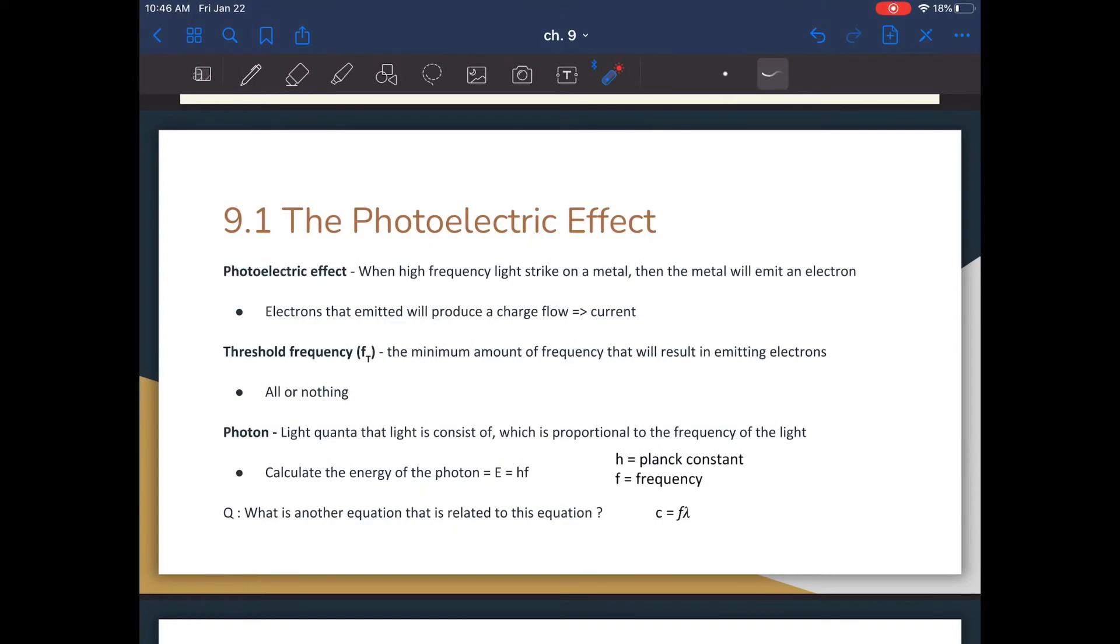Chapter 9.1 is about the photoelectric effect, and it basically states that when light of high enough frequency strikes a metal, then the metal will emit an electron. These electrons that are emitted may create a certain flow, which will cause a current. This incident light must have a frequency that's higher than the threshold frequency in order for this emission to occur.